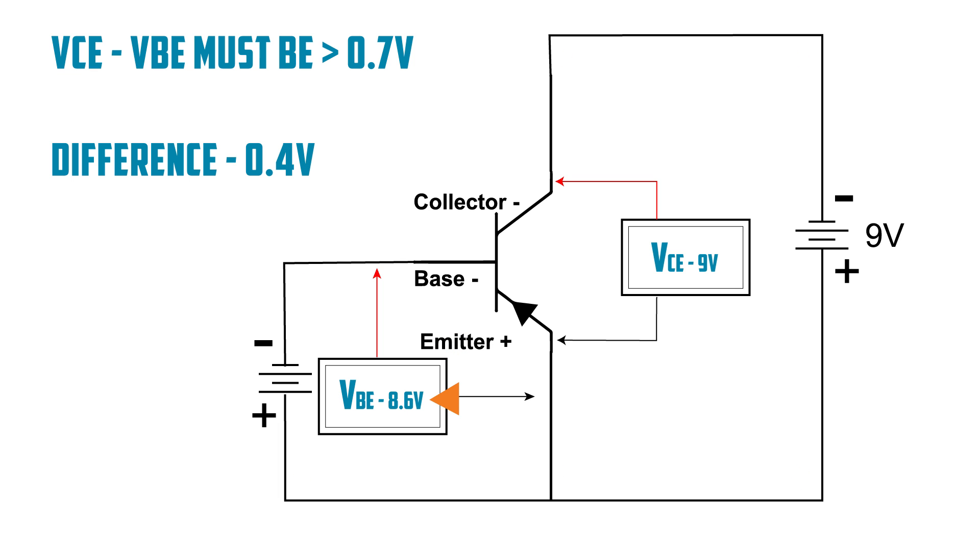So if the base-emitter voltage is 8.6 volts, that's only a difference of 0.4 volts. The transistor would be off and no current would flow. If the base-emitter voltage is 7 volts, that is a difference of 2 volts, which is more than 0.7 volts. So the transistor would be on and current would flow between the emitter and collector. A difference of less than 0.7 volts, off. A difference of more than 0.7 volts, on.